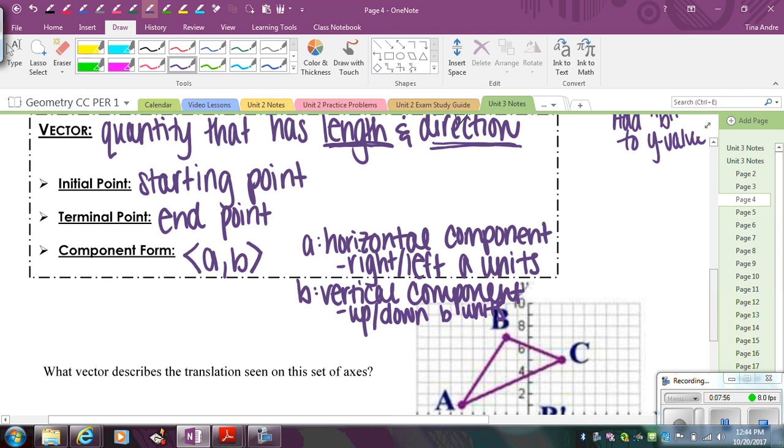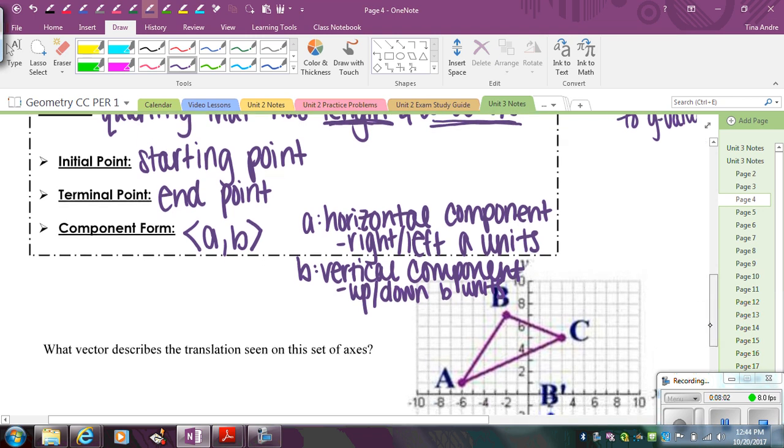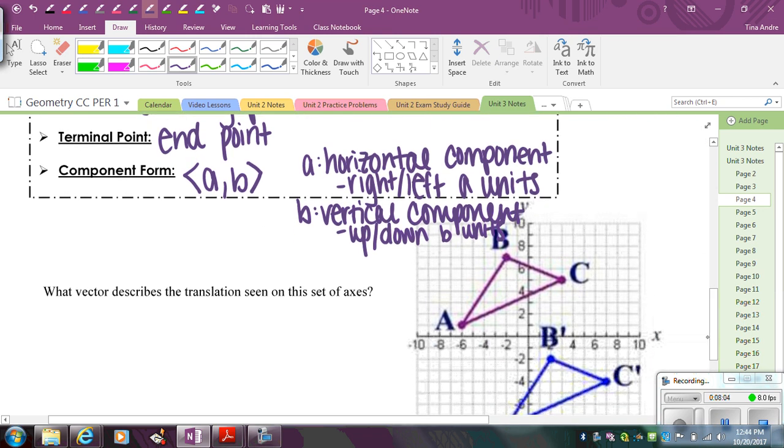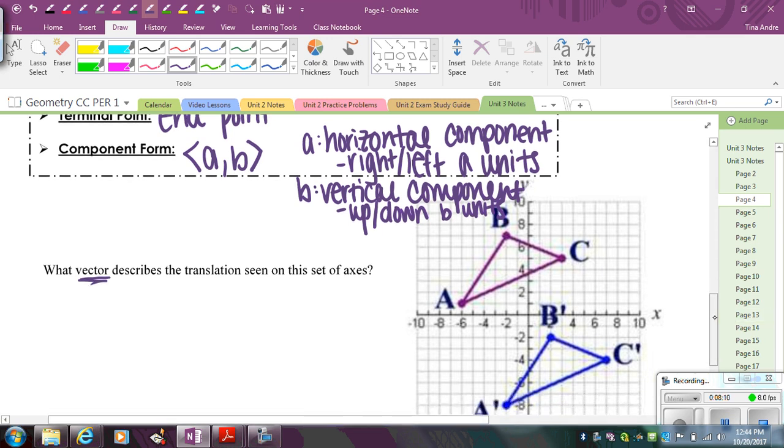So basically, this notation is called the vector notation, but it's really the same thing as what you saw with the other translation rules. So if we look at this, it says what vector describes this translation. So when we're identifying vectors, or anytime you're looking at transformations, you always want to start with the non-primes, and how did I get to the prime. So this is my starting figure, and then the image has the prime values.